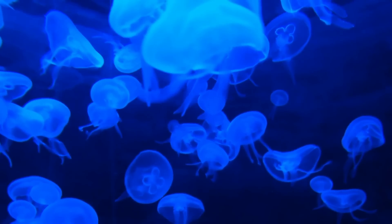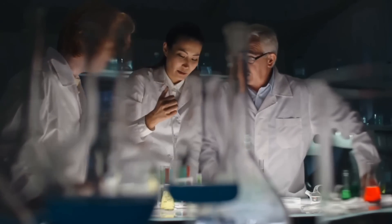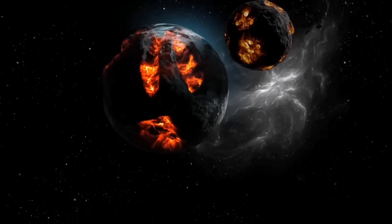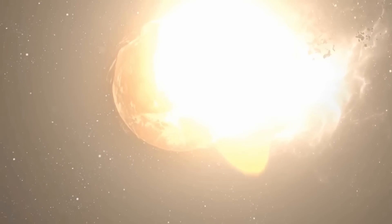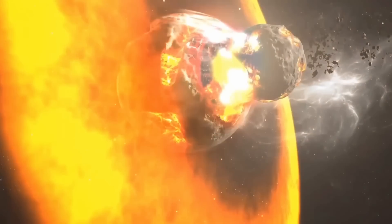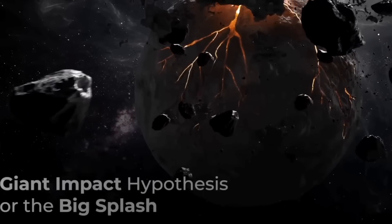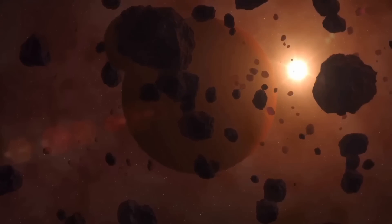The giant impact theory was chosen by scientists as the most compelling explanation for the Moon's creation despite the fact that there are other theories. According to this idea, the Moon was created when the Earth collided with another small planet. It is roughly the size of Mars. The Moon forms around Earth's orbit due to debris from this collision.